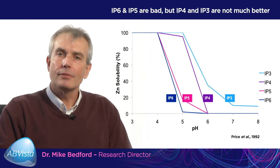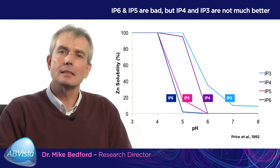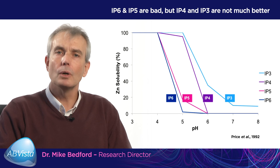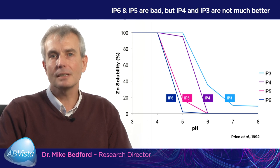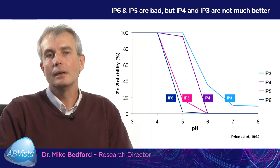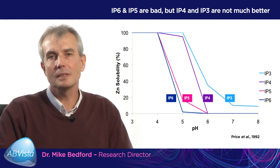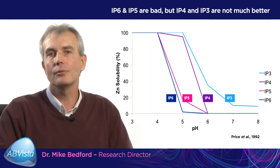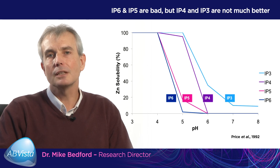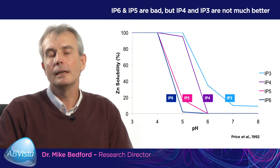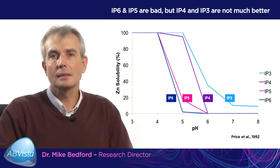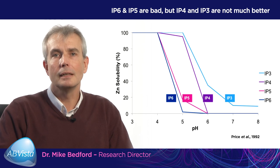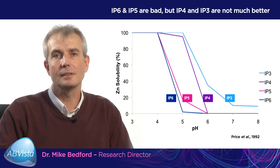This visual shows another interesting facet of the differential properties of the esters IP6, IP5, IP4 and IP3. On the y-axis is the solubility of zinc and how that's influenced by pH in the presence of IP6, 5, 4 and 3. At pH 3, zinc is wholly soluble — 100% soluble — regardless of whether there's IP6, 5, 4 or 3 present. As the pH rises towards pH 5, IP6 precipitates 100% of the zinc, and IP5 precipitates almost 85–90% of the zinc. At pH 6, IP4 is precipitating 100% of the zinc present, and IP3 is precipitating 65% of the zinc.